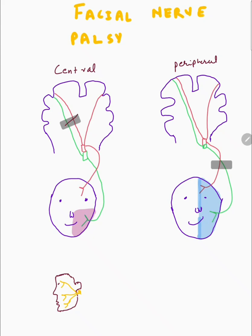So if we have a lesion here, the contralateral fibers will be affected, but the fibers to the upper face will be intact because of its ipsilateral supply. The lower face will not be spared because there is no ipsilateral supply to it. That was the central lesion.